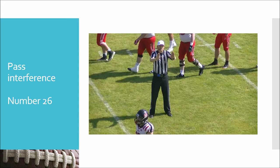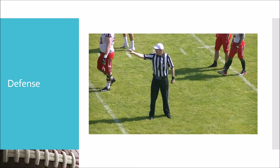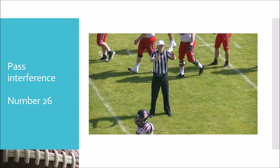Let's have a look at it. So first of all, pass interference number 26. Now what I like to do is make sure that what I say fits with the signal that I'm giving. So first of all, pass interference. And then I like to get the number out of the way quickly for two reasons. One is I don't have to remember it that long. So the quicker I can say number 26, the sooner I can forget all about it. And the other part is I like to build a little bit of suspense before I point to the team. So you go, pass interference number 26, and then you point to the defense. Because if you start out by saying defensive pass interference, then nobody is going to listen to the rest of your announcement because they already know what team is going to be penalized.